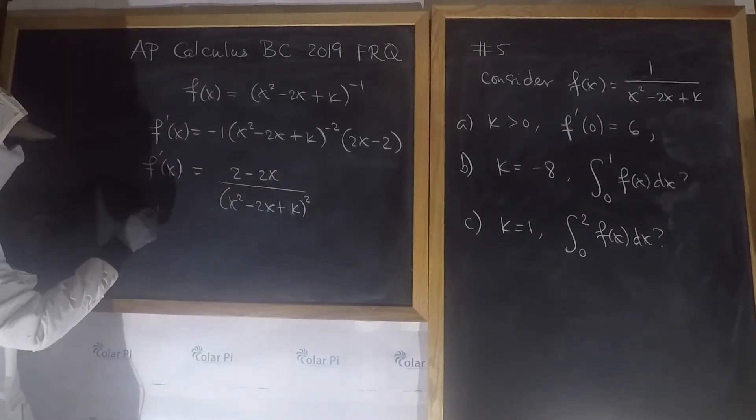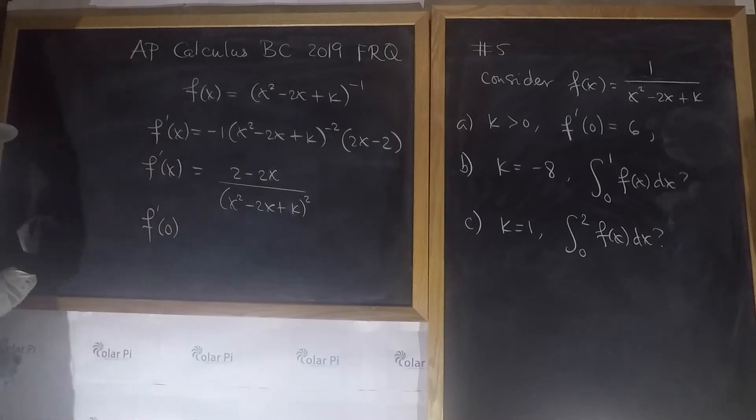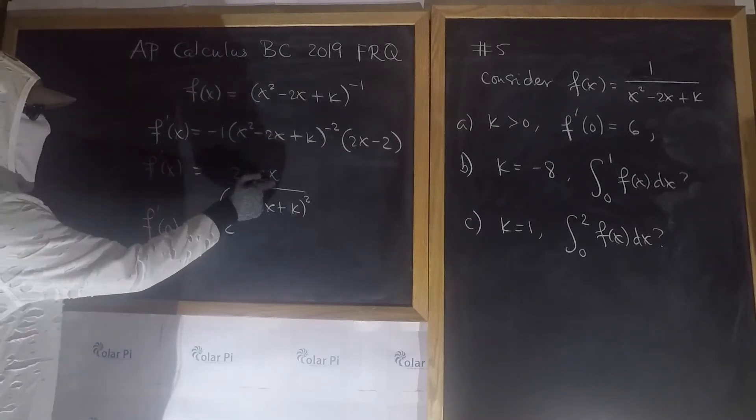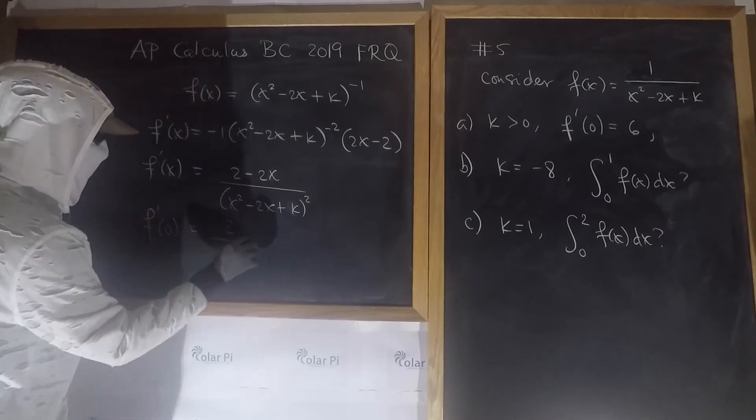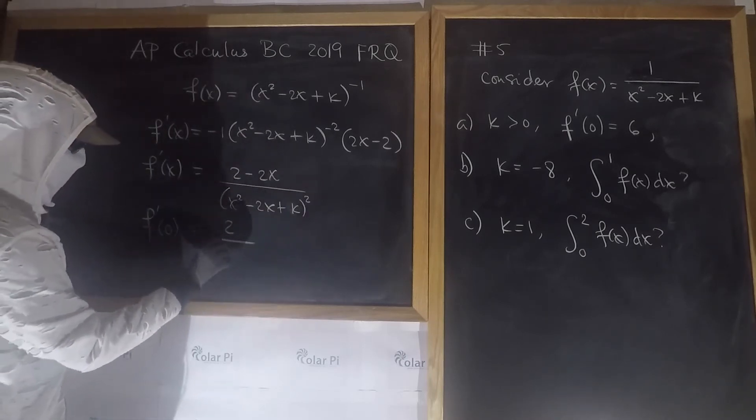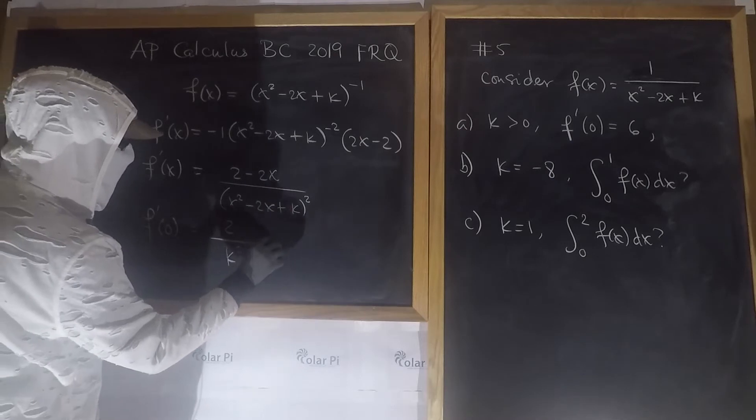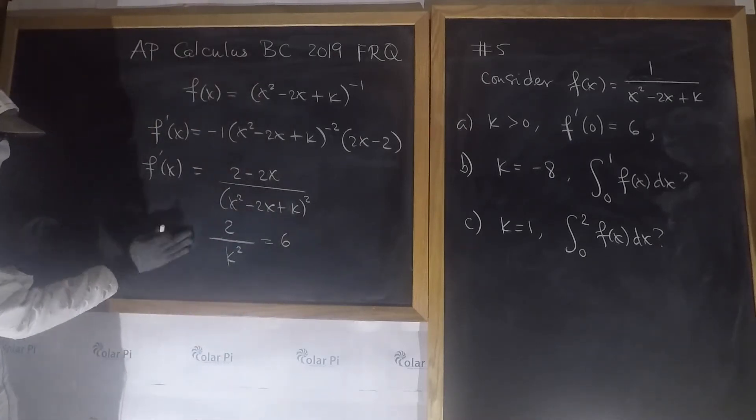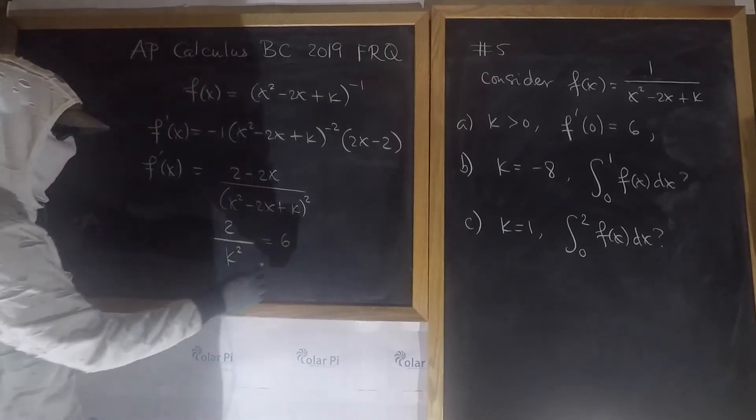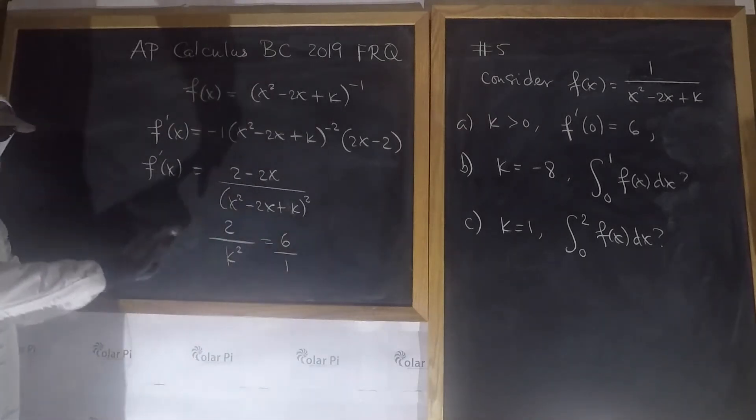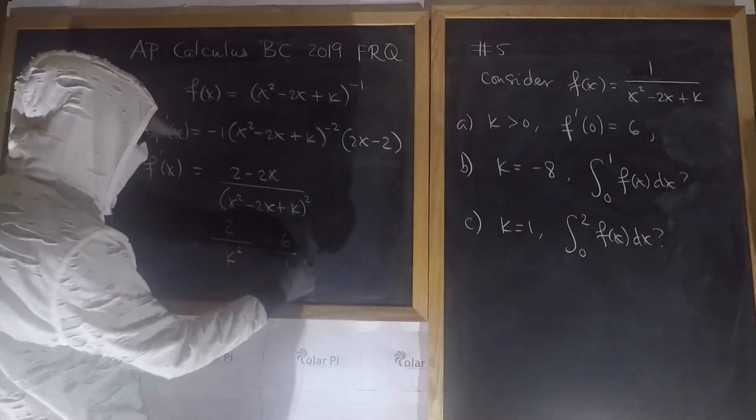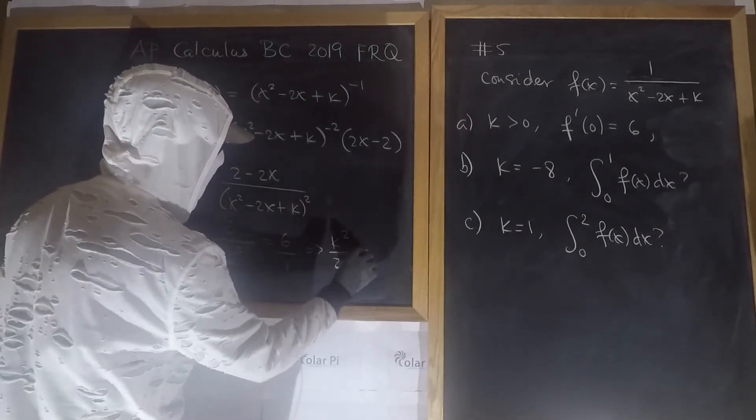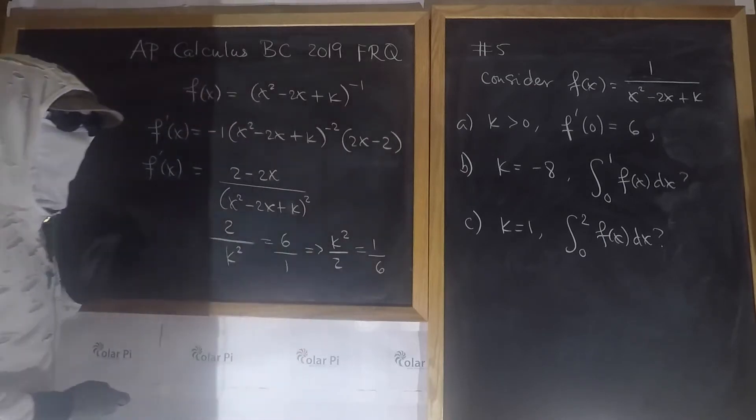So we plug in 0 to figure out what f prime of 0 is, and set it equal to 6. f prime of 0 is going to be 2 in the numerator, because that's 0, and then divided by, in here we get k squared. This here is equal to 6. Now we write 6 as 6 over 1, and we can flip both. I like doing that as opposed to cross multiplying, so we get k squared over 2 is equal to 1 over 6.